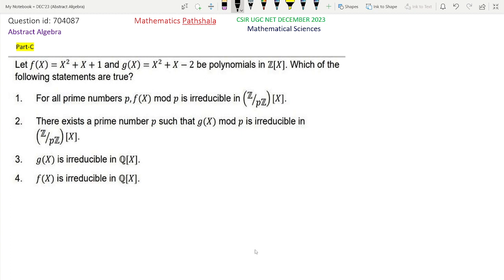First we read the question. Let f(x) = x² + x + 1 and g(x) = x² + x - 2 be polynomials in Z[x]. Which of the following statements are true?